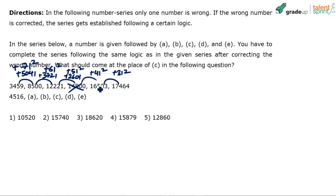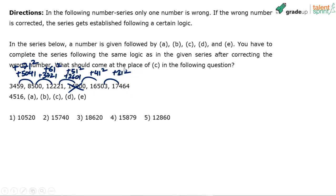If you actually check the difference between 16,503 and 17,464, it is 961, which is 31 squared. So 16,503 plus 961 gives you 17,464. The pattern is confirmed. The wrong number is 14,800, which is of no use — we apply the correct logic.